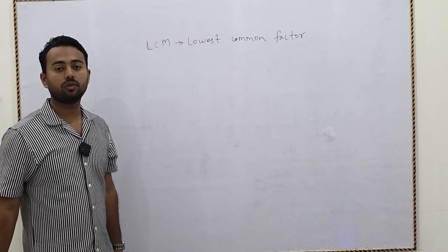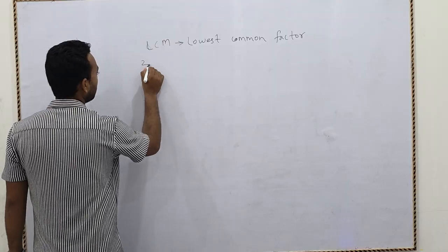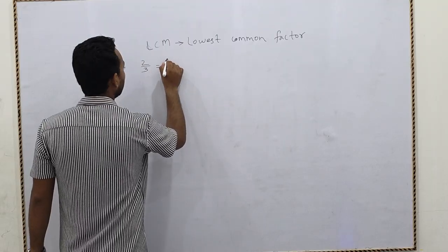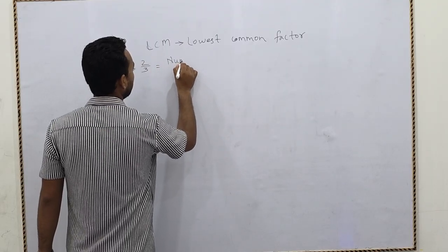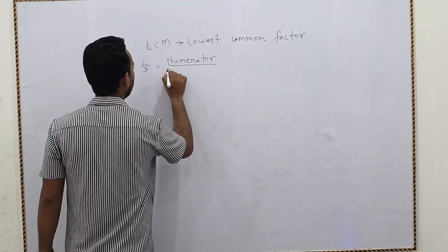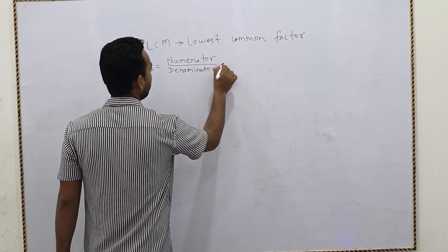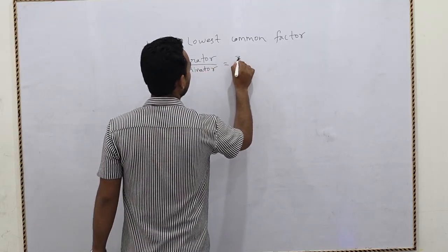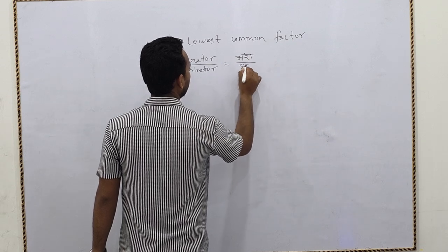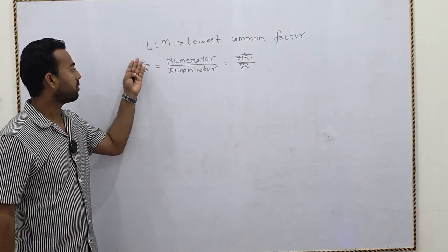Before going to LCM, first we have to know what is a fraction. A fraction is given in terms of numerator and denominator. The upper one is called the numerator, and the downward one is called the denominator. In Hindi, we say 'ans' and 'her'.